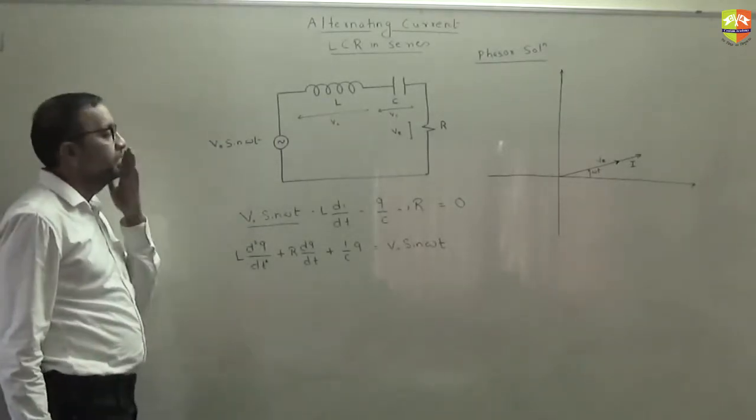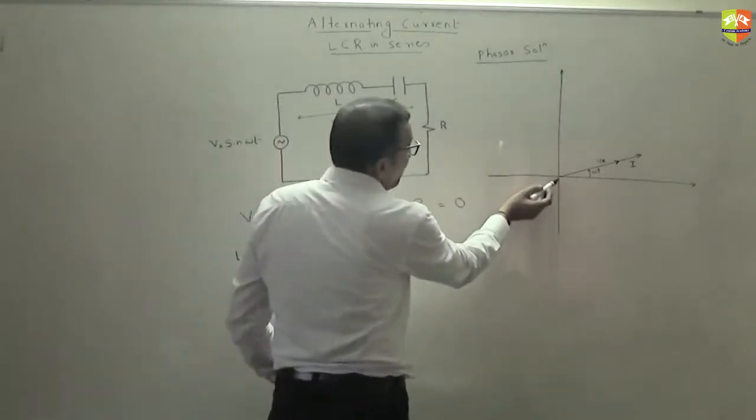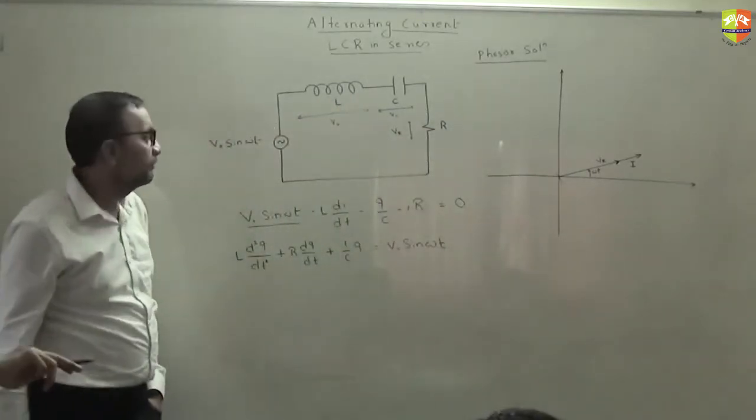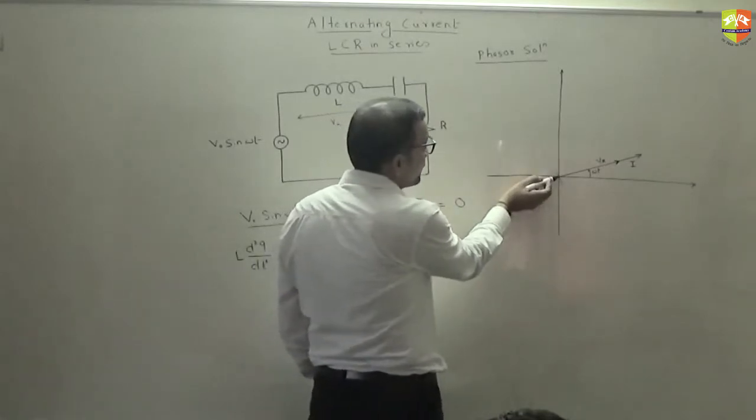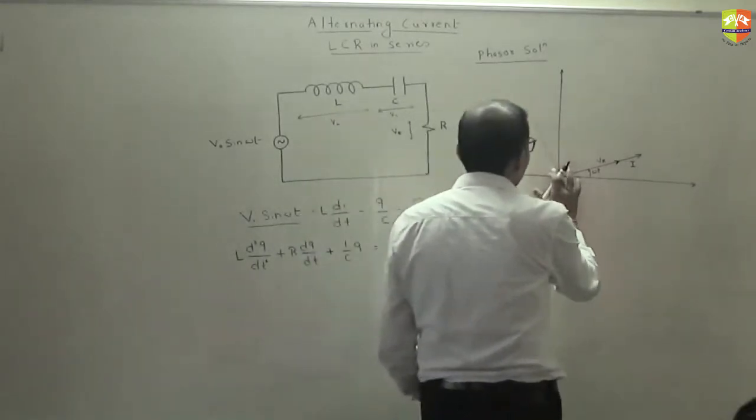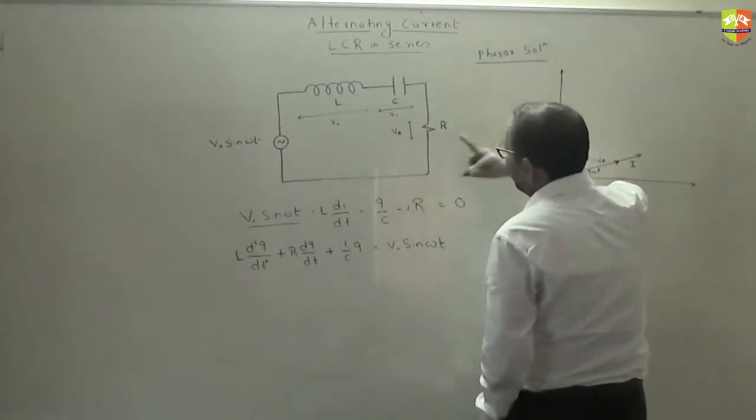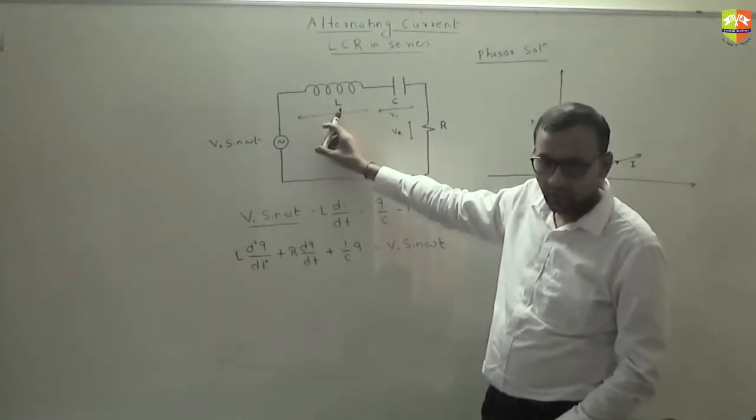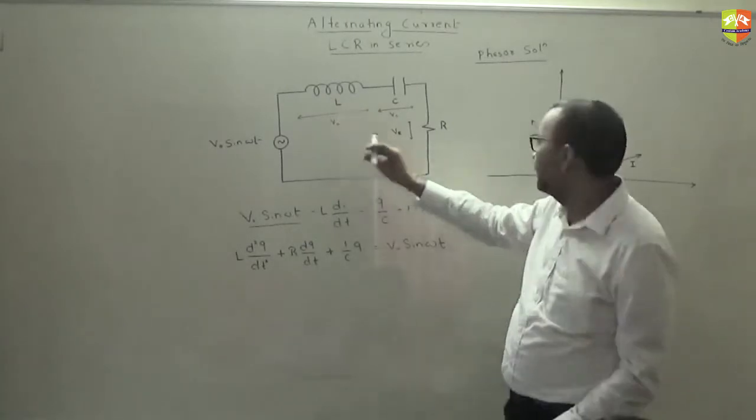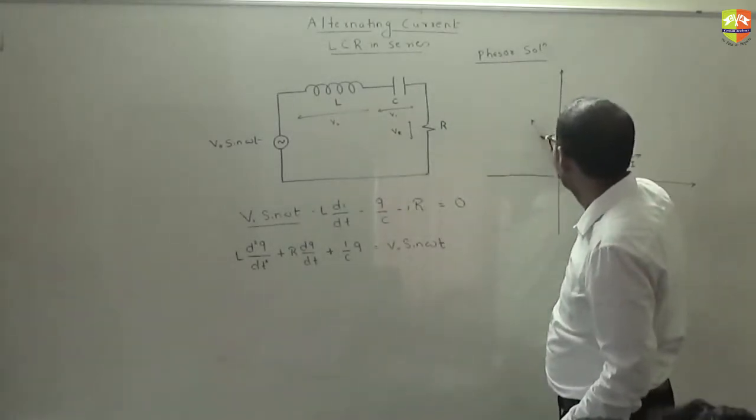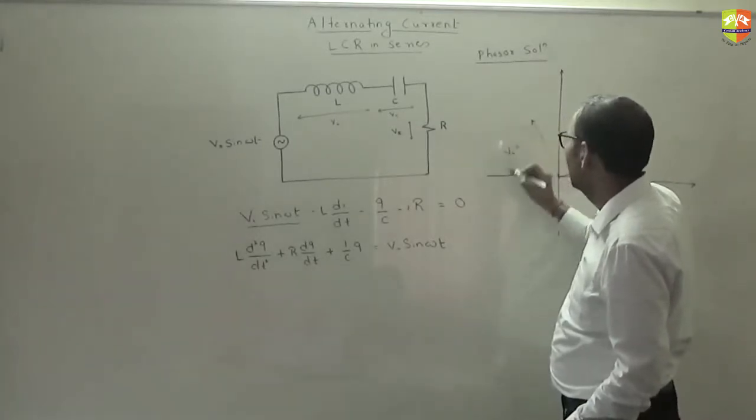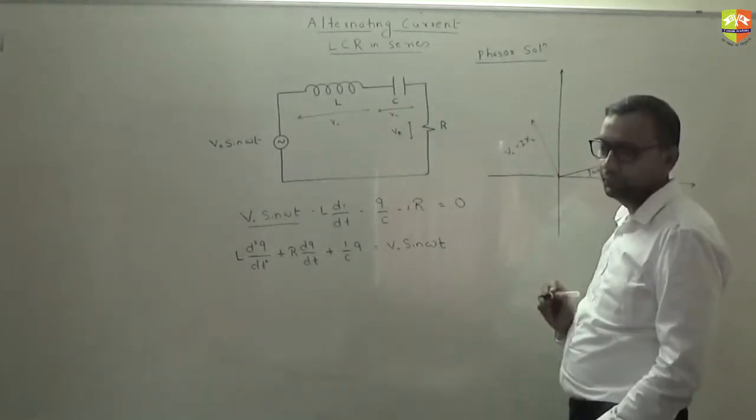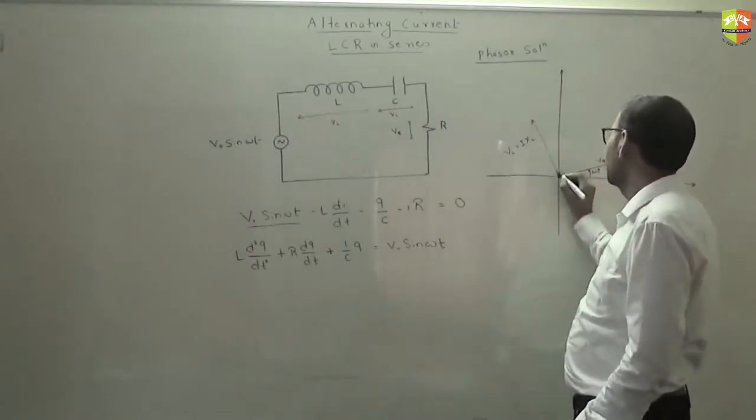VL will be where? VL will be above. The voltage leads the current in the inductor. So as soon as current enters, the same current goes through all three. So as soon as current enters the inductor, the voltage becomes ahead of current. How much is this? This is VL. This is equal to I times XL. This is 90 degree.